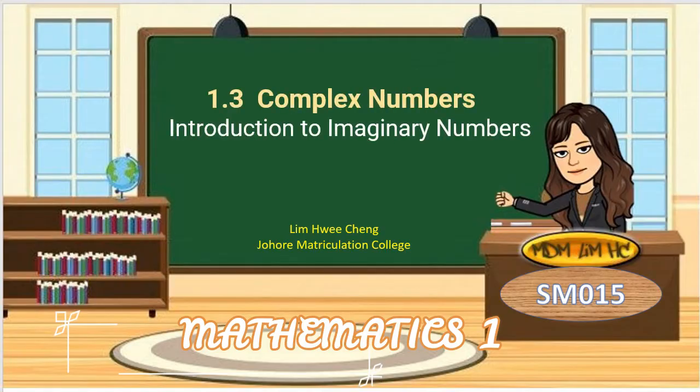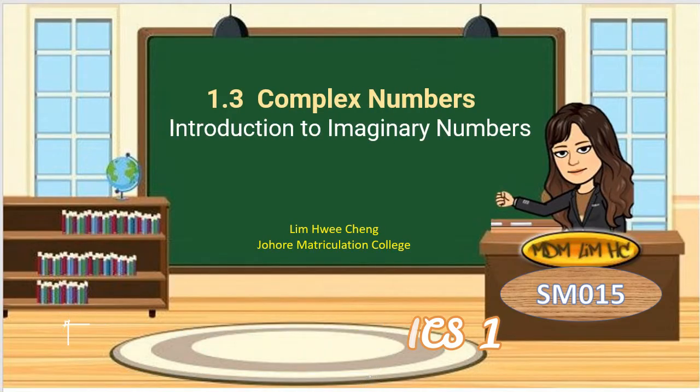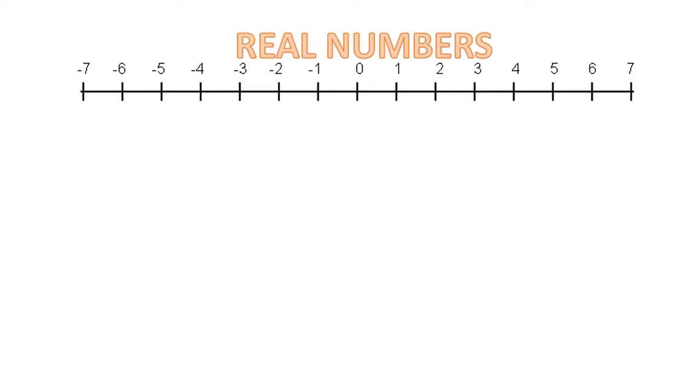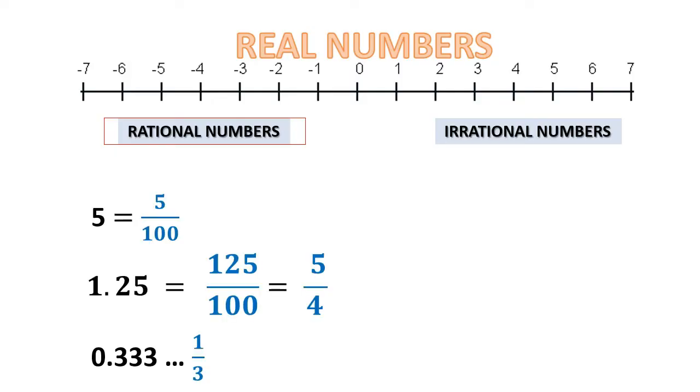In these videos, I'm going to introduce you to imaginary numbers. We already know what real numbers are. These are the numbers that can be present on the number line. We also know that real numbers can be classified as rational and irrational numbers. Rational numbers are those that can be represented as a ratio of two integers with no common factors.